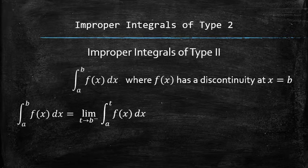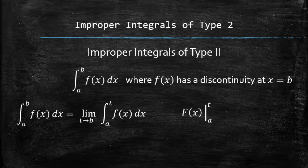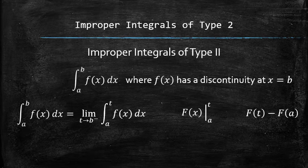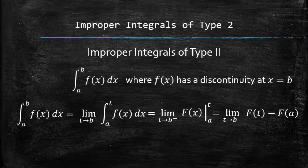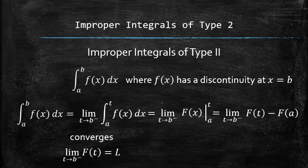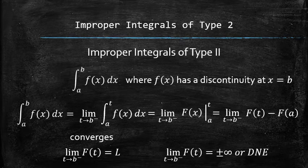Now that we don't have to worry about the discontinuity in the upper limit, we can find the general antiderivative and apply the fundamental theorem of calculus, and only then focus on finding the limit of the resulting function in terms of the new variable t. If the limit is finite, then we say that the original integral converges. Otherwise, if the limit is infinite or doesn't exist, we say that the original integral diverges.